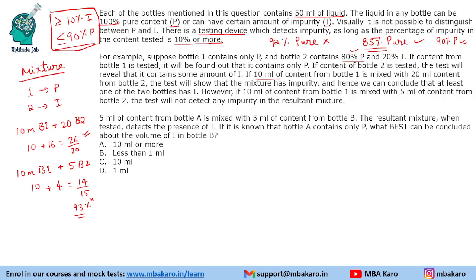Question 1: 5 ml of content from bottle A is mixed with 5 ml of content from bottle B. The resultant mixture, when tested, detects the presence of I. It is known that bottle A contains only P. We are mixing A and B in a 1:1 ratio, and the resultant mixture detects I. In order for the mixture to be detected, it should have at most 90% purity.